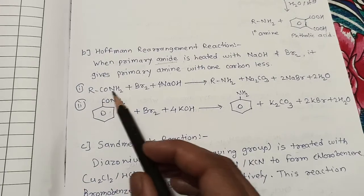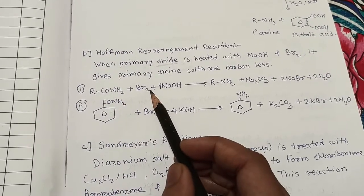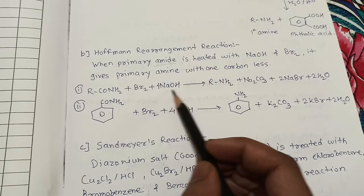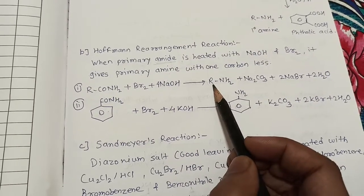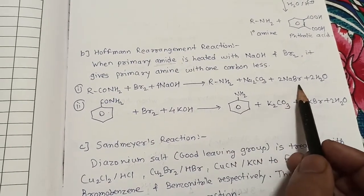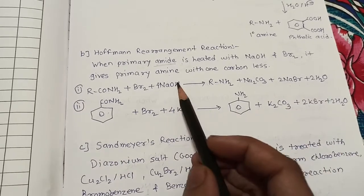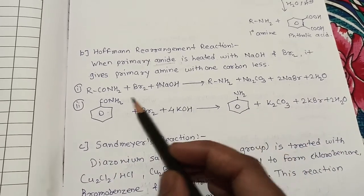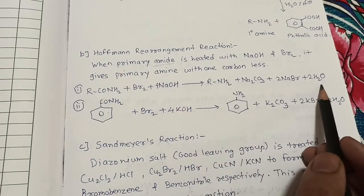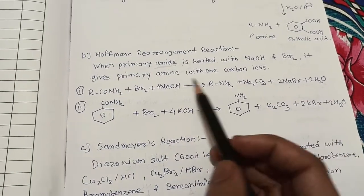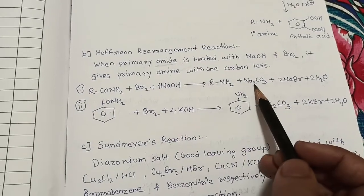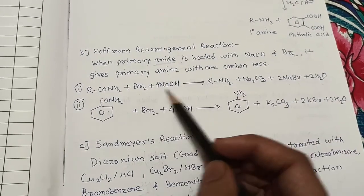The amide RCONH₂, when treated with bromine in the presence of base NaOH, gives a primary amine. The byproducts are sodium carbonate, NaBr, and water. On the reactant side there are H and O, so water is formed; excess sodium combines with Br to give NaBr, and the remaining part forms sodium carbonate.